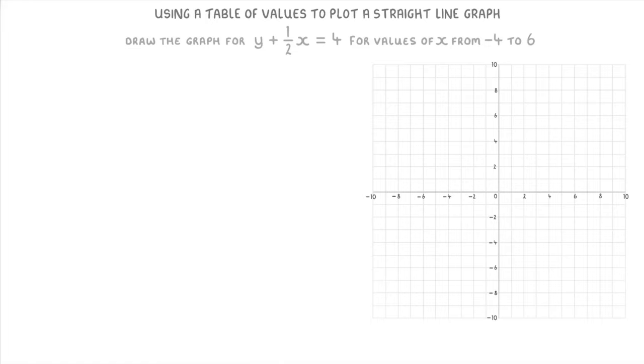And secondly, we're told to only draw the graph from when x is negative 4 to when x is positive 6. So only in this region of the graph. Regardless though, neither of these things really make any much difference to how we do the question.